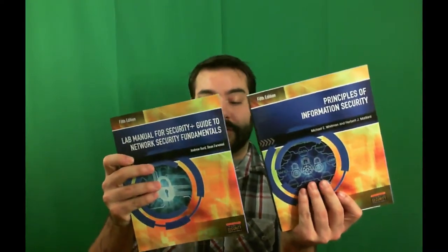That's actually what we're going to be looking at in this class. One of the things we're going to need is actually two books for this — this nice little wonderful bundle from Cengage: Principles of Information Security, and the lab manual for the Security Plus guide of it.